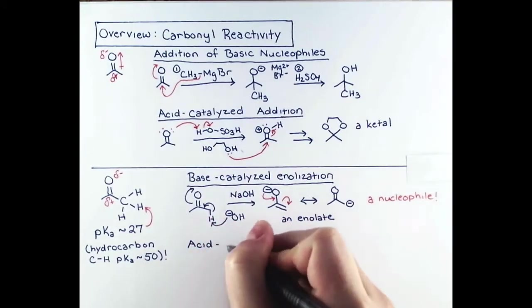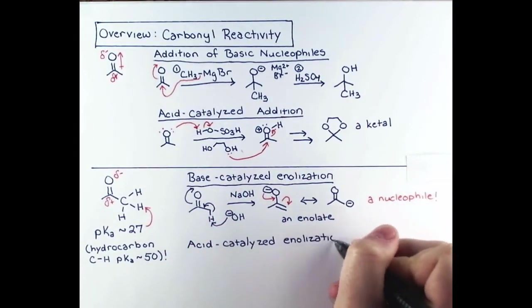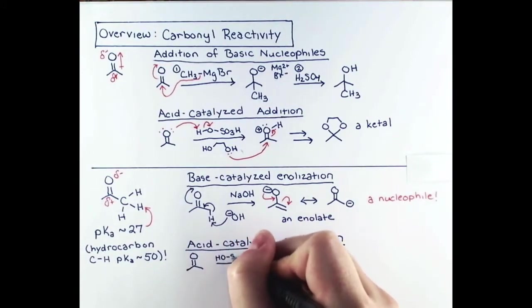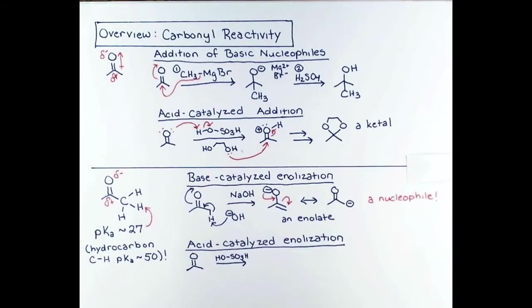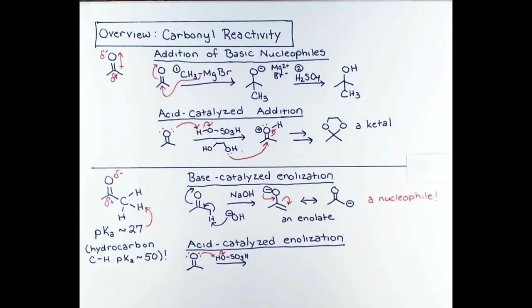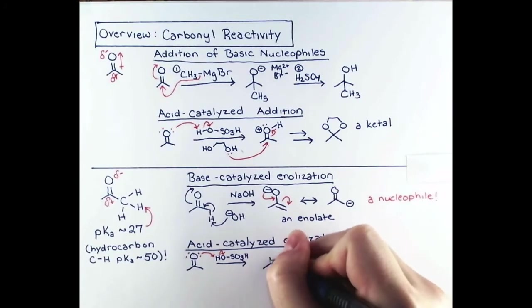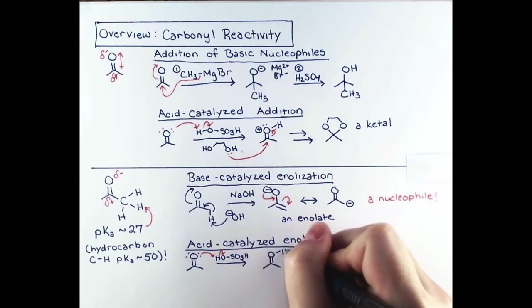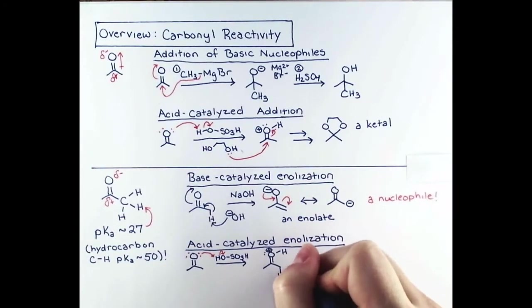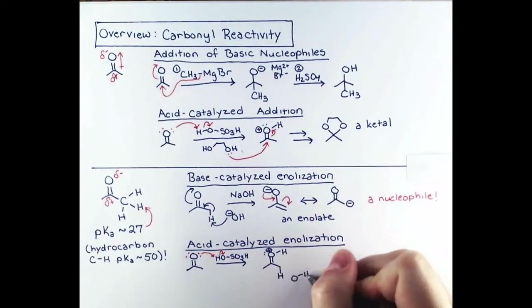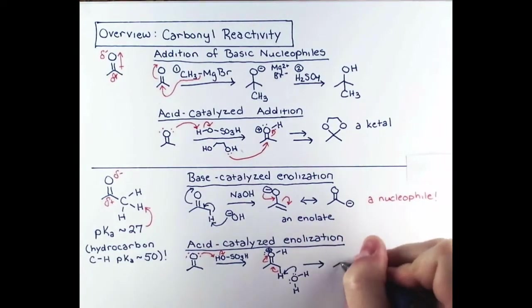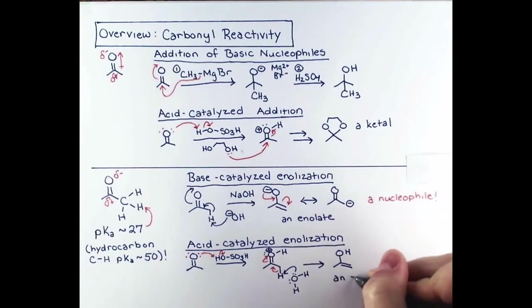A compound with analogous reactivity called an enol can be formed under acid catalyzed conditions. The mechanism begins the same as the acid catalyzed addition we showed above, where the electrons on the delta negative oxygen can attack a proton on sulfuric acid in this case. Protonation of the carbonyl oxygen makes the alpha hydrogens even more acidic, and they can be deprotonated. This is reasonable because the conjugate base of sulfuric acid is highly resonance stabilized and not very nucleophilic. Typically there is a bit of water in even the most concentrated solutions of acid. So under acidic conditions we formed an enol, which is also a nucleophile.